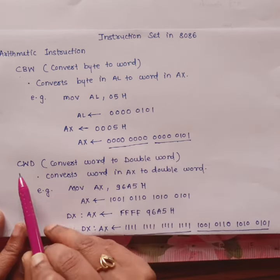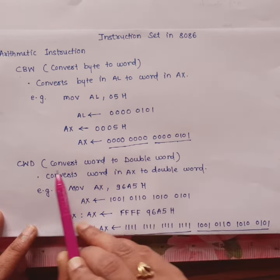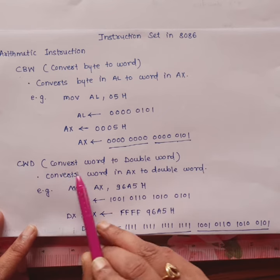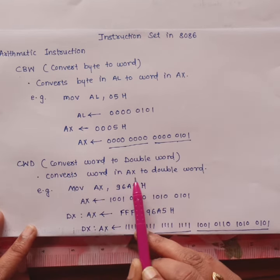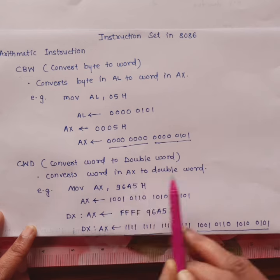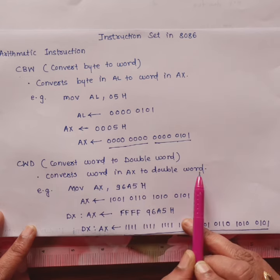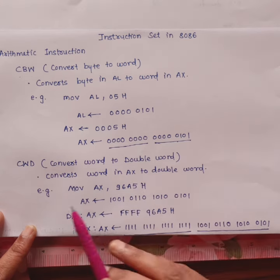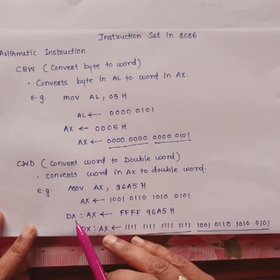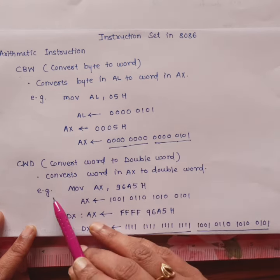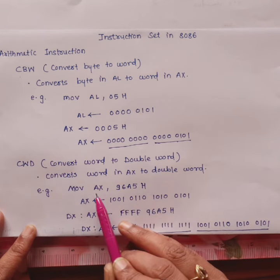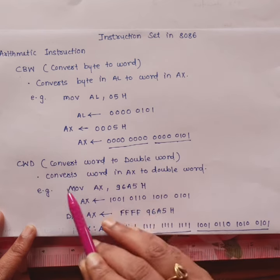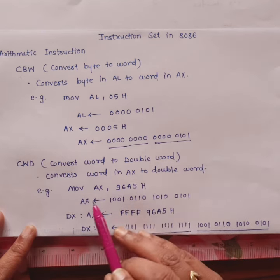Next is CWD, which stands for Convert Word to Double Word. The word from the AX register gets extended to a double word by taking help of the DX register. For example, 96A5h is moved to the AX register using a MOV instruction.